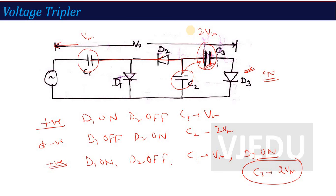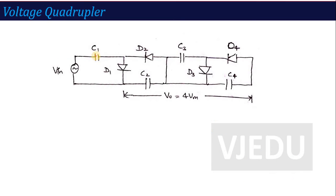If we add one more diode-with-capacitor combination to the Tripler, it becomes a Quadrupler circuit. The Quadrupler circuit consists of C1, D1, D2, C2, C3, D3 — which we saw in the Tripler — and now another diode with a capacitor combination is added. With this addition, it becomes a Voltage Quadrupler.